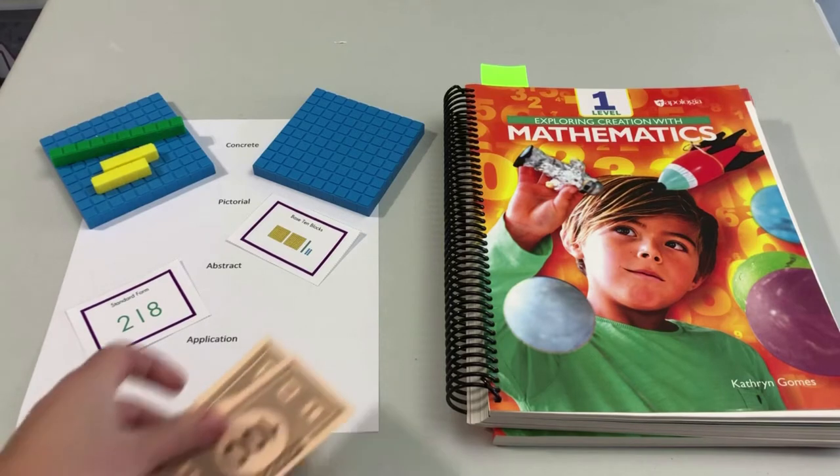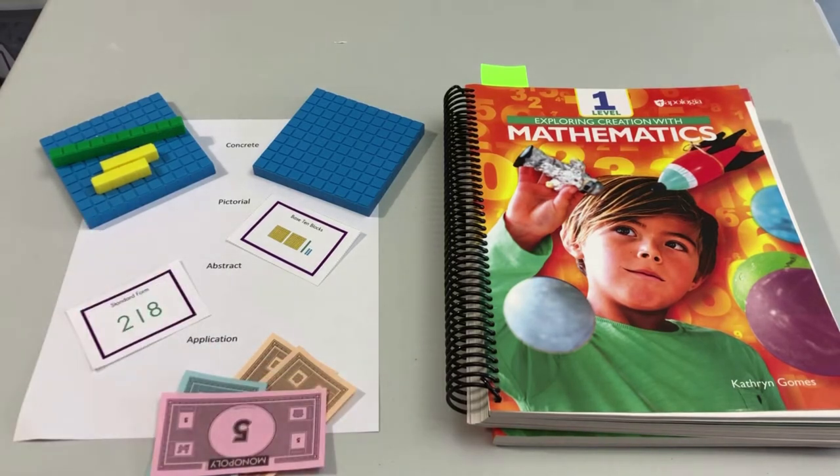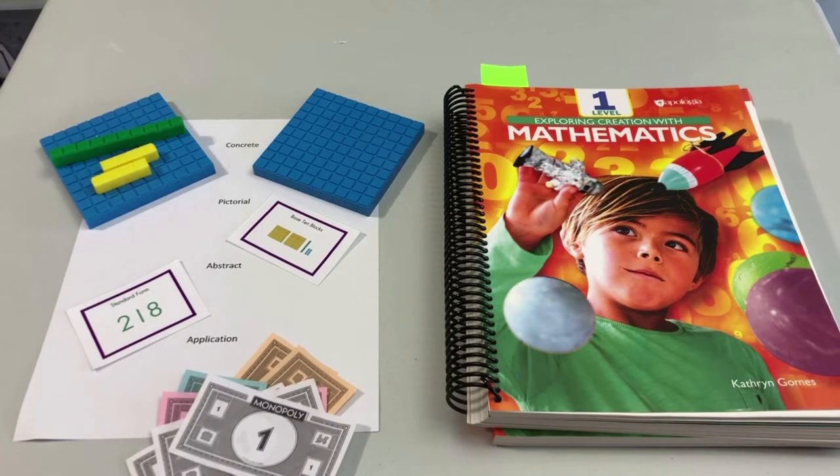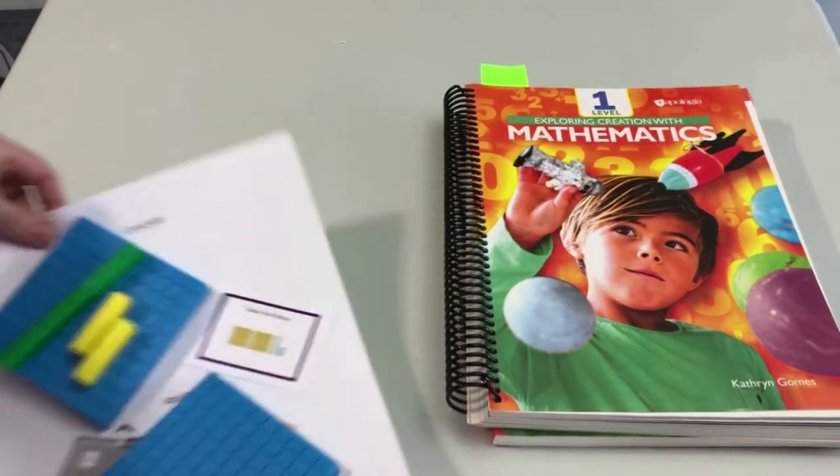For instance, say you were playing Monopoly and they owed someone $218 and your child was effectively able to build 218 with the money that they had—they can apply it, they've got it. Let me show you what this progression looks like in the level one book with just one specific example.